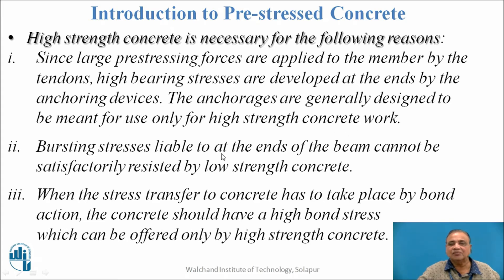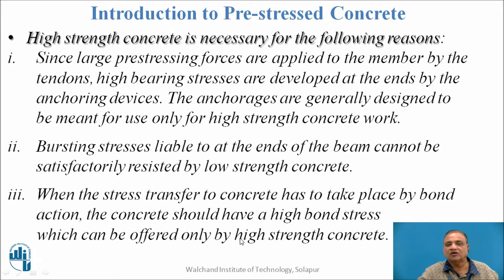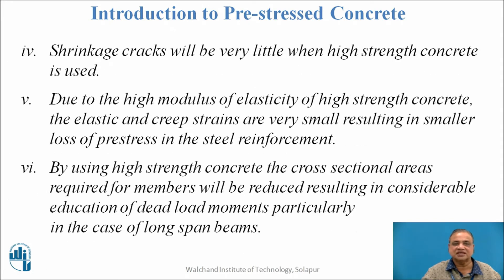Bursting stresses liable to occur at the ends of the beam — perpendicular to the prestressing force — cannot be satisfactorily resisted by low-strength concrete. When stress transfer to the concrete takes place by bond action, the concrete should have high strength, since high bond stress can be offered only by high-strength concrete. More the concrete strength, more is the bond stress. Also, shrinkage cracks will be very little when high-strength concrete is used.